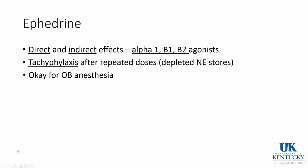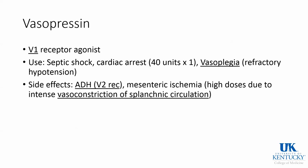Ephedrine has direct and indirect effects — alpha-1, beta-1, and beta-2. After several doses you can get tachyphylaxis because you deplete norepinephrine stores. Vasopressin is a V1 receptor agonist and is used in septic shock, cardiac arrest, and vasoplegia. It works very well in sick environments. Side effects at high doses include intense vasoconstriction, which can further increase acidosis. There can also be effects on V2 receptors, which are responsible for ADH and water retention.